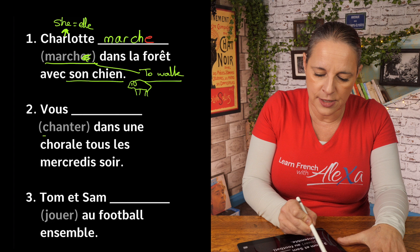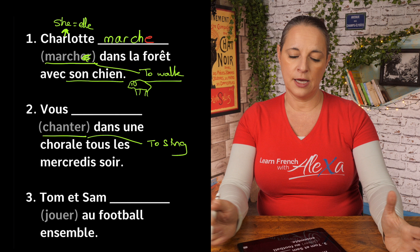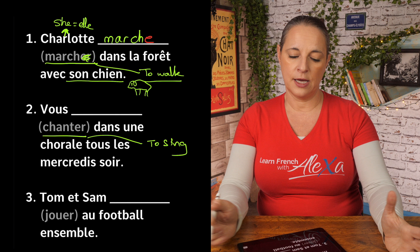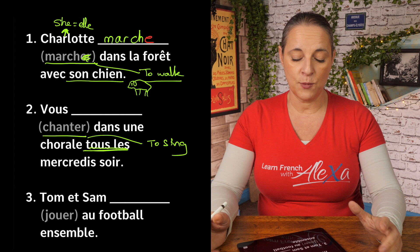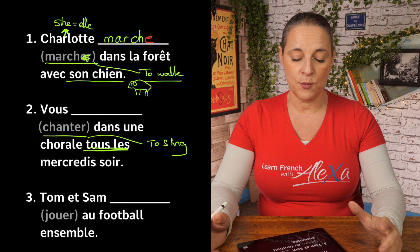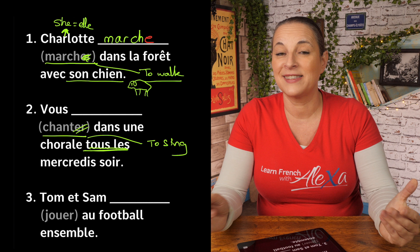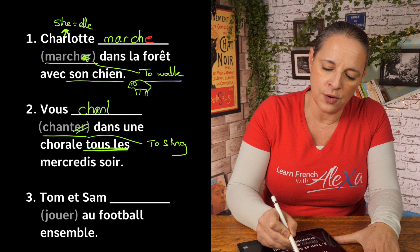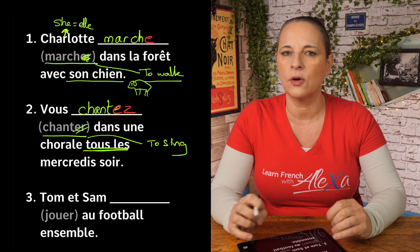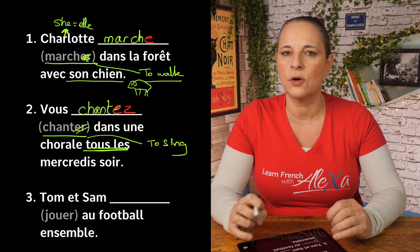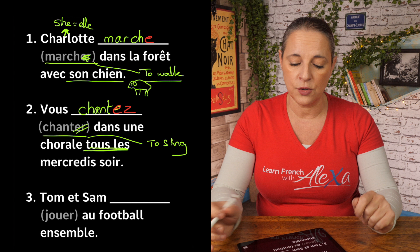Number two: vous, and the verb is chanter — to sing. For vous, the ending is EZ. Vous chantez dans une chorale tous les mercredis soirs — you sing in a choir every Wednesday evening. You can't put ER, E, or ONS — for vous, the ending is EZ. Vous chantez dans une chorale tous les mercredis soirs.